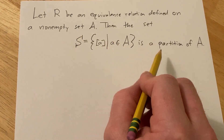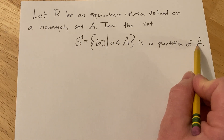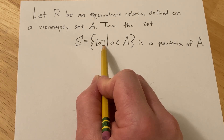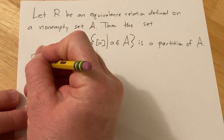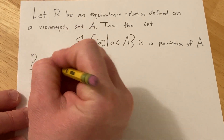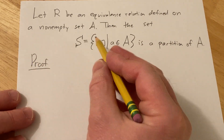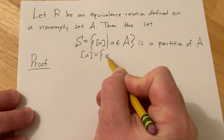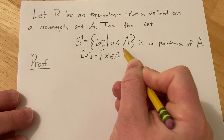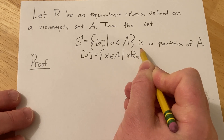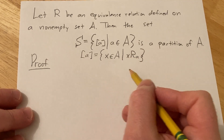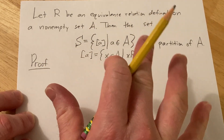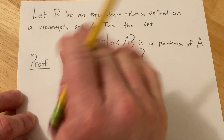So basically we have to show in this proof that every single element of A belongs to exactly one of these equivalence classes, and we also have to show that these are non-empty. So let's go ahead and go through the proof very carefully. I'll also recall what this is — the equivalence class of A is the set of all x in A such that x is related to A. This is a big result in mathematics, and it does take a lot of work to get here in terms of definitions.